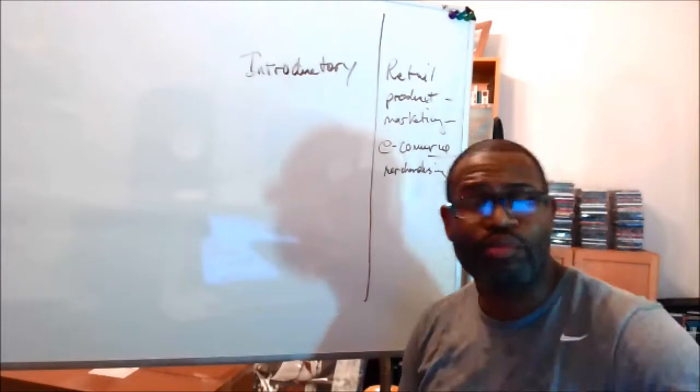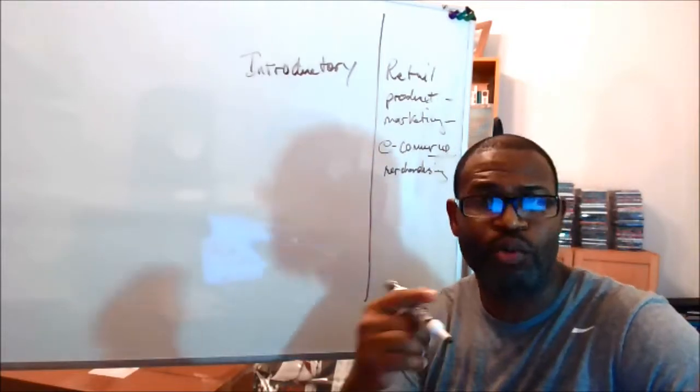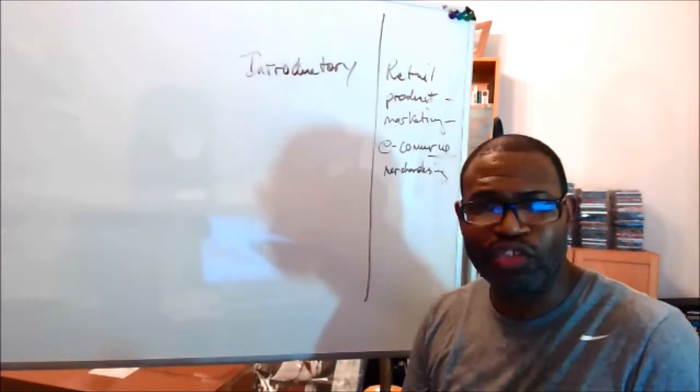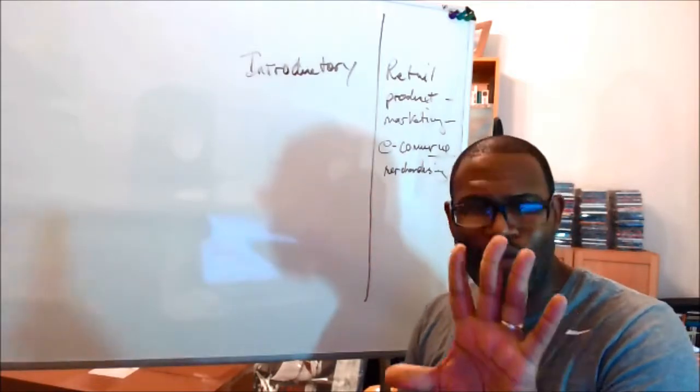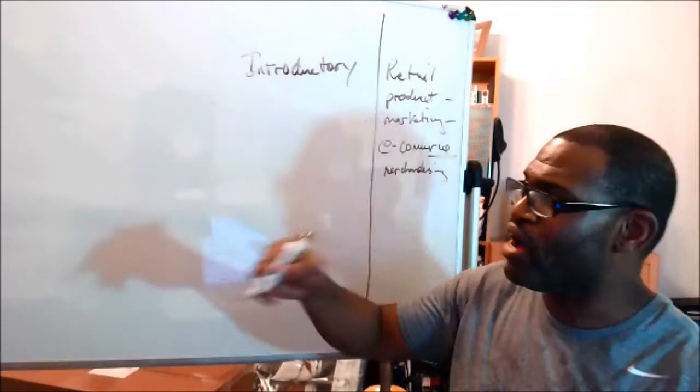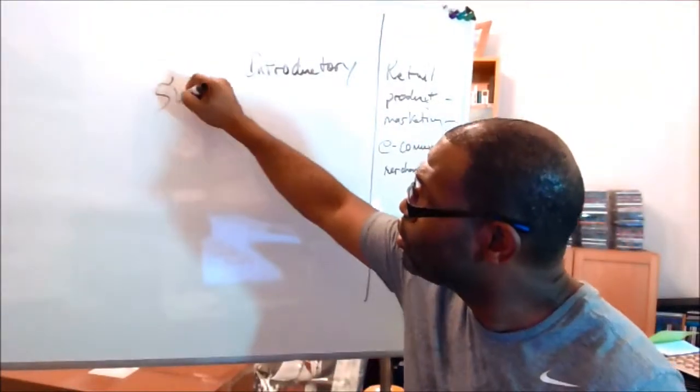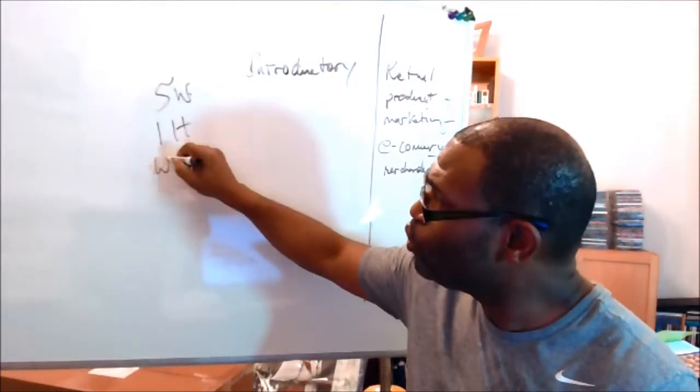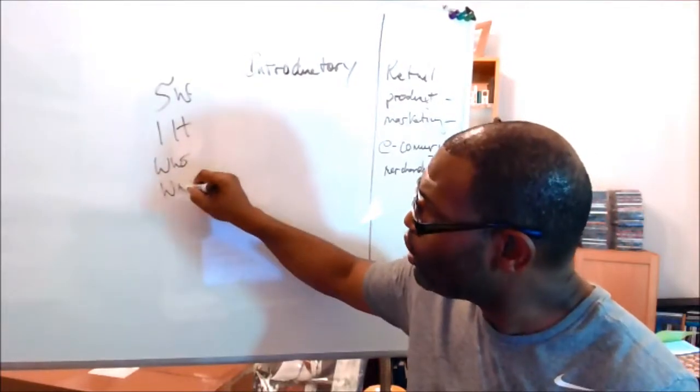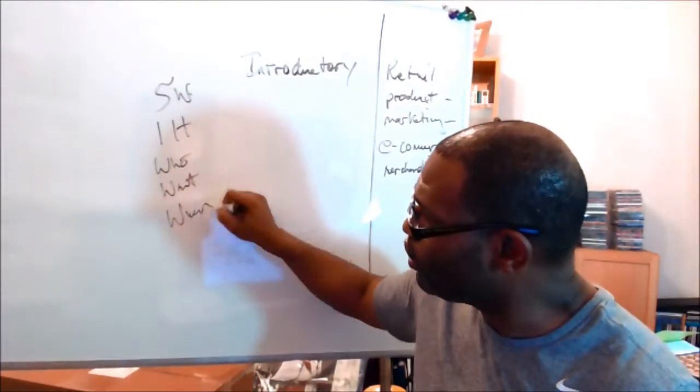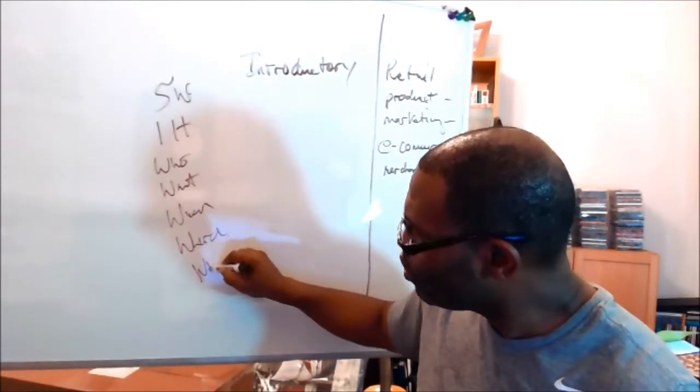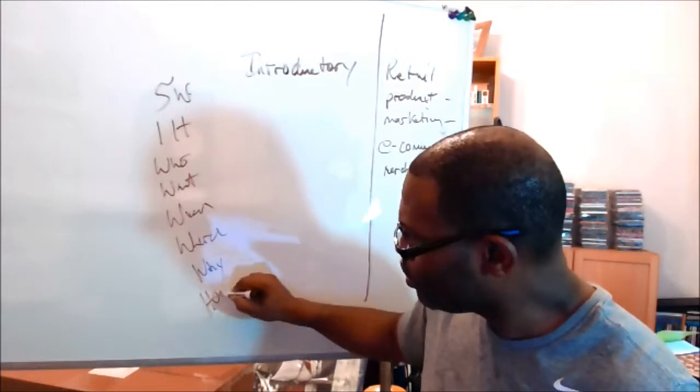Now you're going to have to go out and probably get books that will help support your idea or your thesis statement. But what happens in an introduction is we need to go directly to our five questions, or our five W's and one H: Who, What, When, Where, Why, and How.